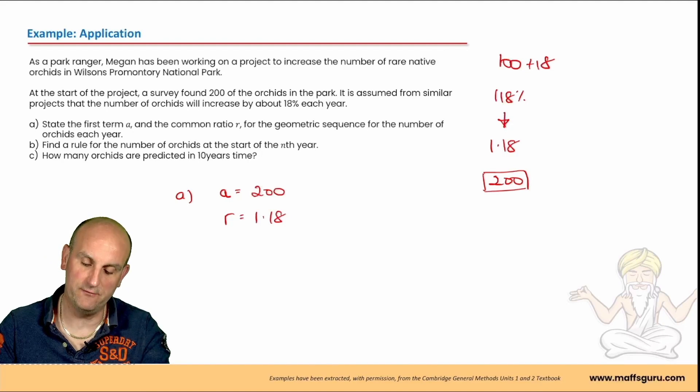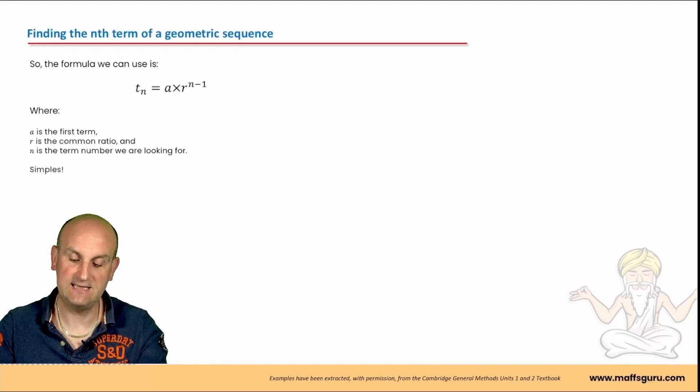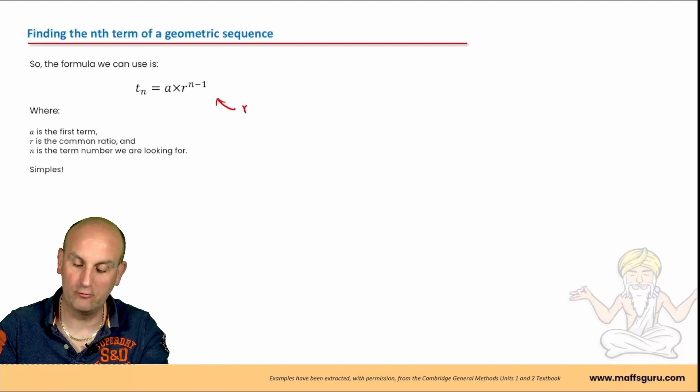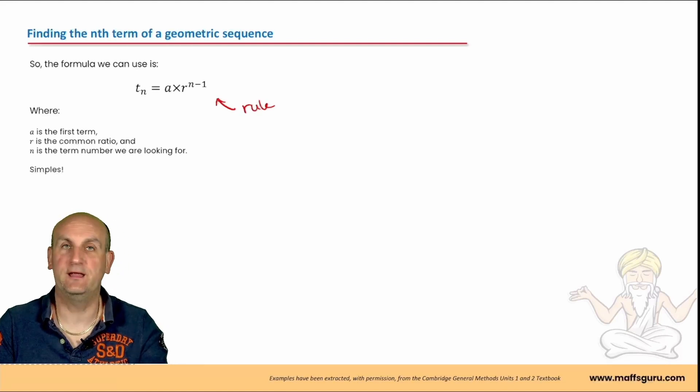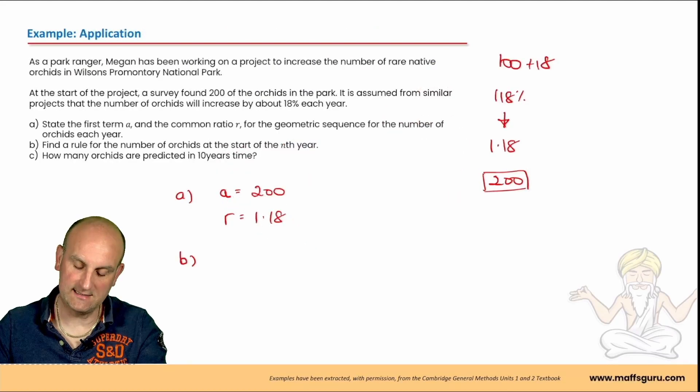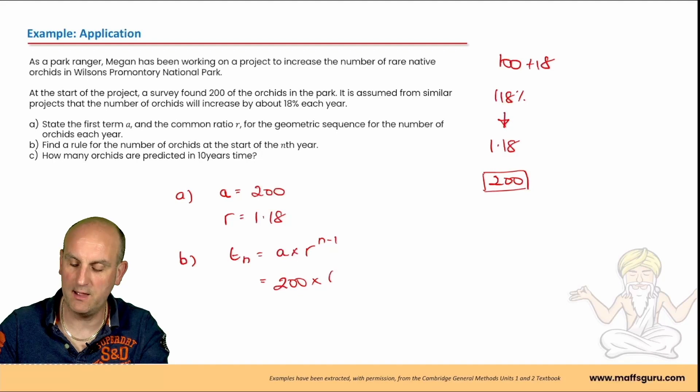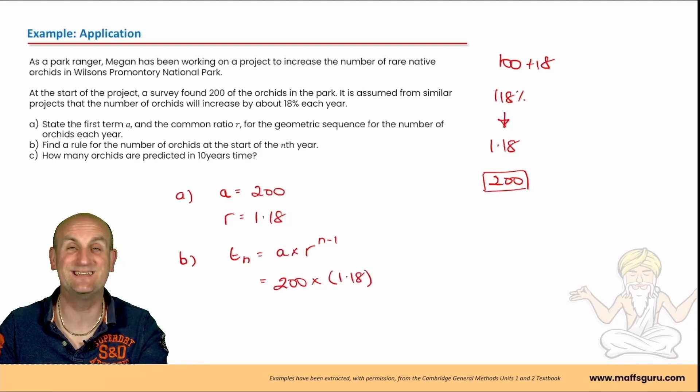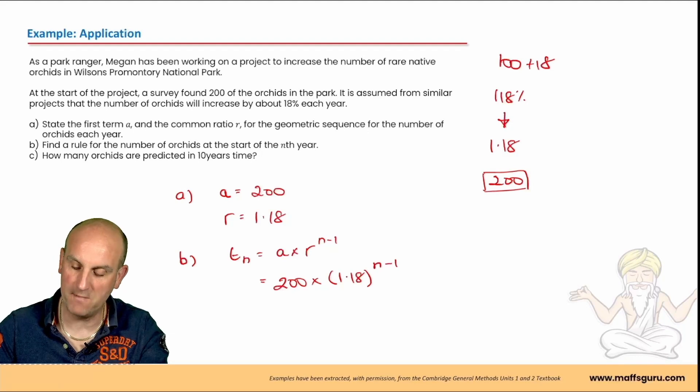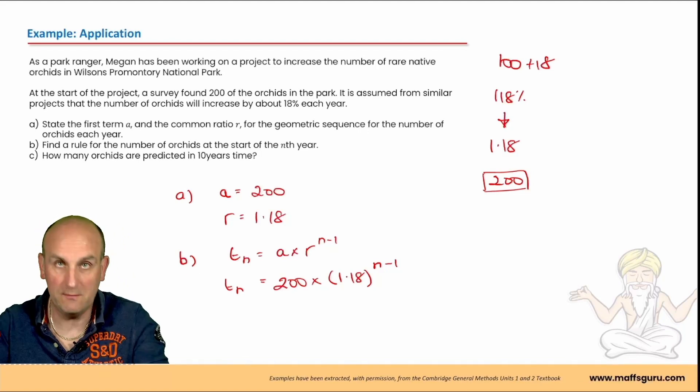Part B, find a rule for the number of orchids at the start of the nth year. Well again, when we go back to the rule, let's go back. This there is a rule. Yes, so we'll use this here as my rule. And again, in another video, I'm going to talk about a recurrence relationship. It's very important you understand the difference between those two. But we want to have that rule. So the general rule is t of n is equal to a times r to the power of n minus 1. We know what a is. It's 200 multiplied by r. Now I'm going to put this in brackets just so it's nice and easy to read, 1.18, and then to the power of n minus 1. Now, because this question we don't know what n is, that is perfect to leave it like that. That is my answer. Don't make it any more complicated than that.